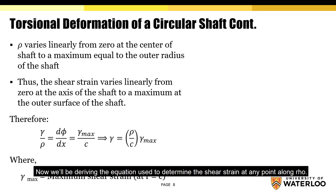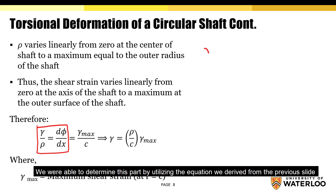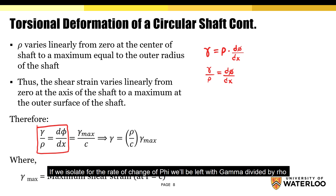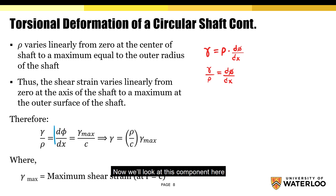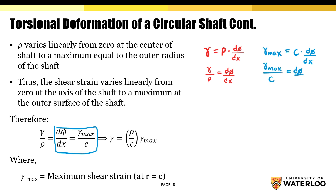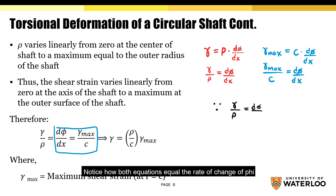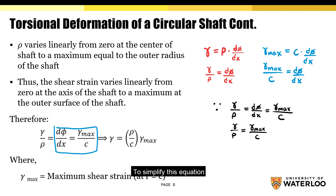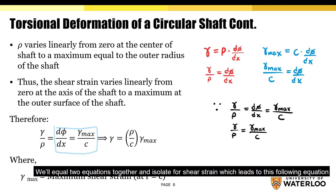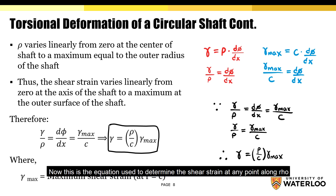Now we'll derive the equation to determine the shear strain at any point along rho. Starting from γ = ρ·(dφ/dx), we isolate the rate of change of phi: dφ/dx = γ/ρ. Using the same equation with ρ replaced by c gives the maximum shear strain: dφ/dx = γ_max / c. Since both expressions equal dφ/dx, we set them equal and isolate for gamma, yielding the final equation: γ = (ρ/c)·γ_max. This is the equation used to determine shear strain at any point along rho.